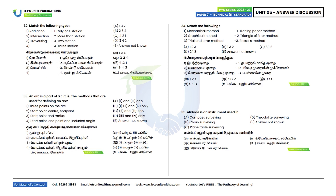Thirty-second question: What is the correct match for the following? Radiation uses one station, intersection uses two stations, and traversing uses more than one station. The correct order is 1, 3, 2. Option C is the correct answer.